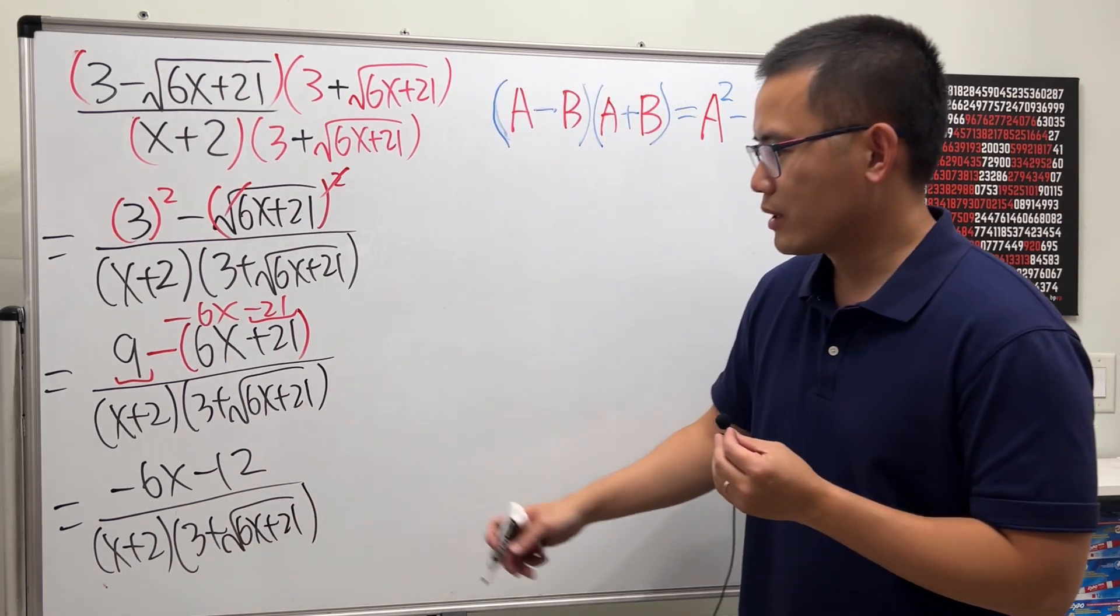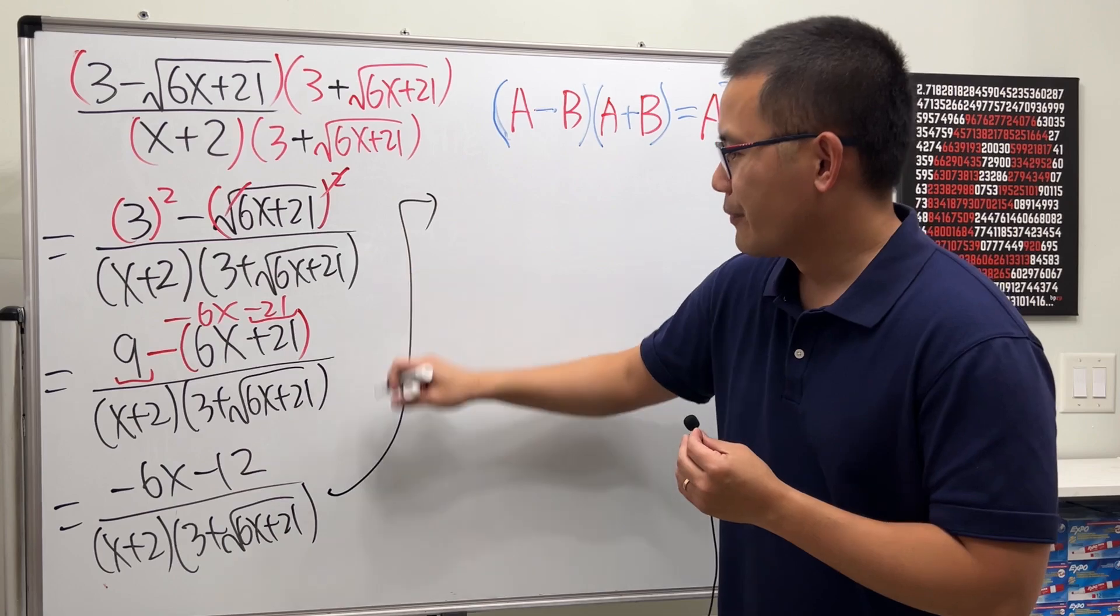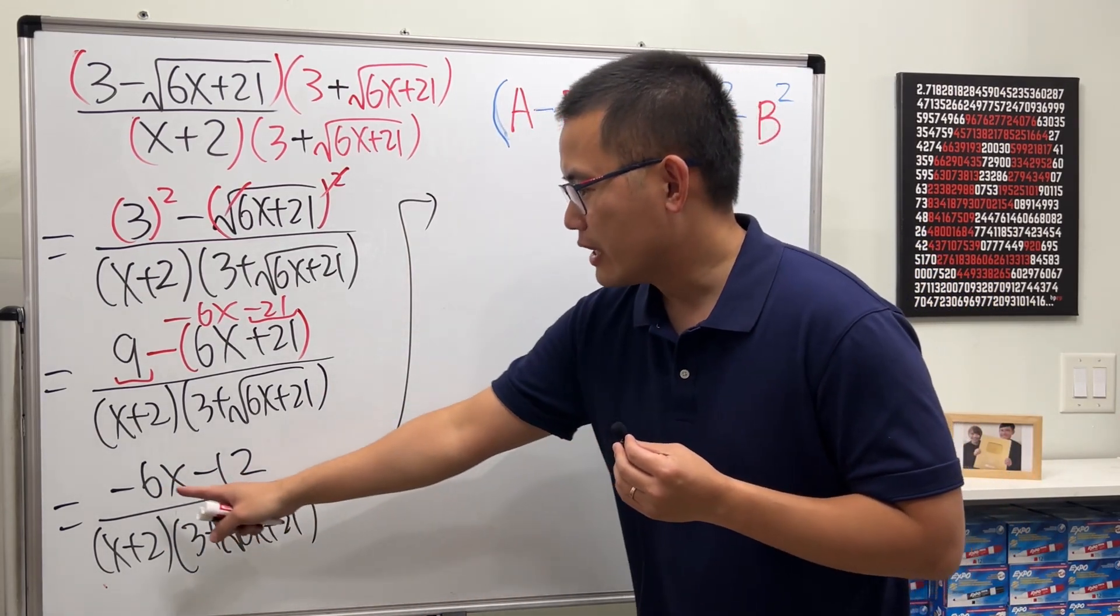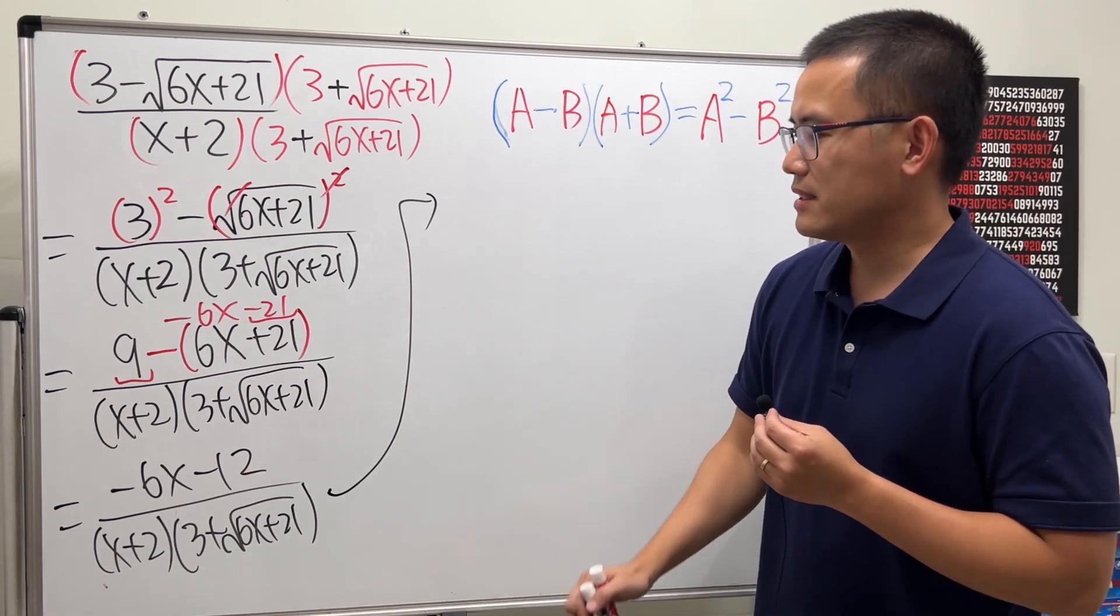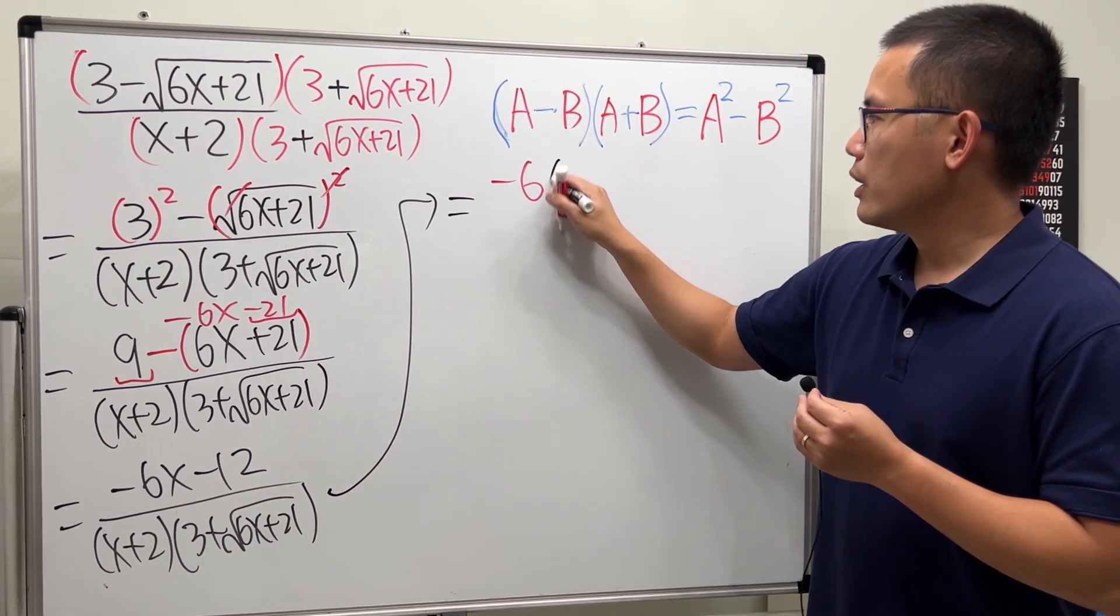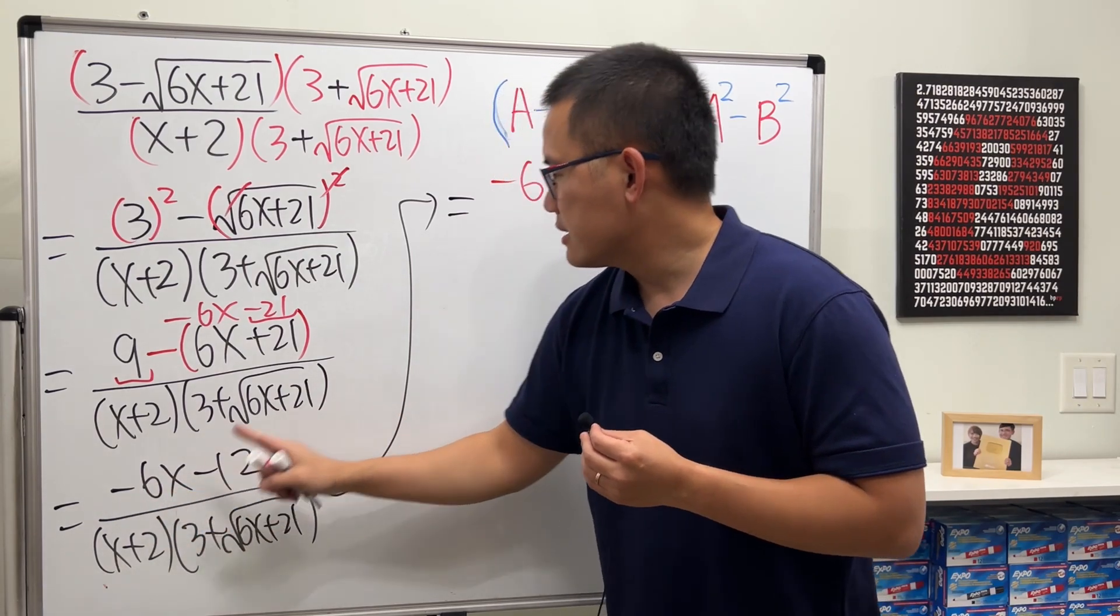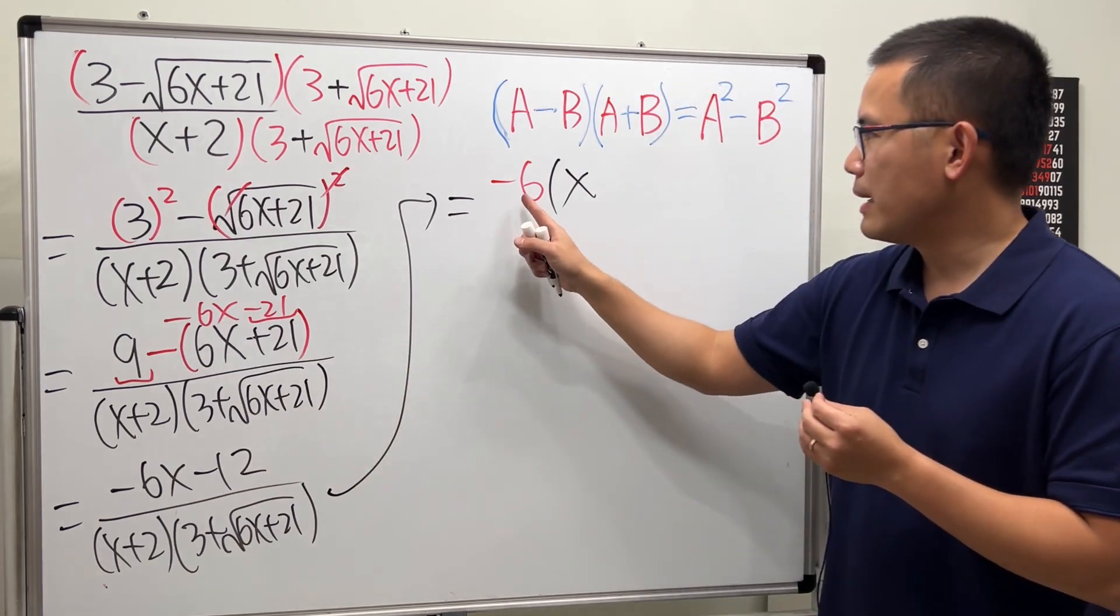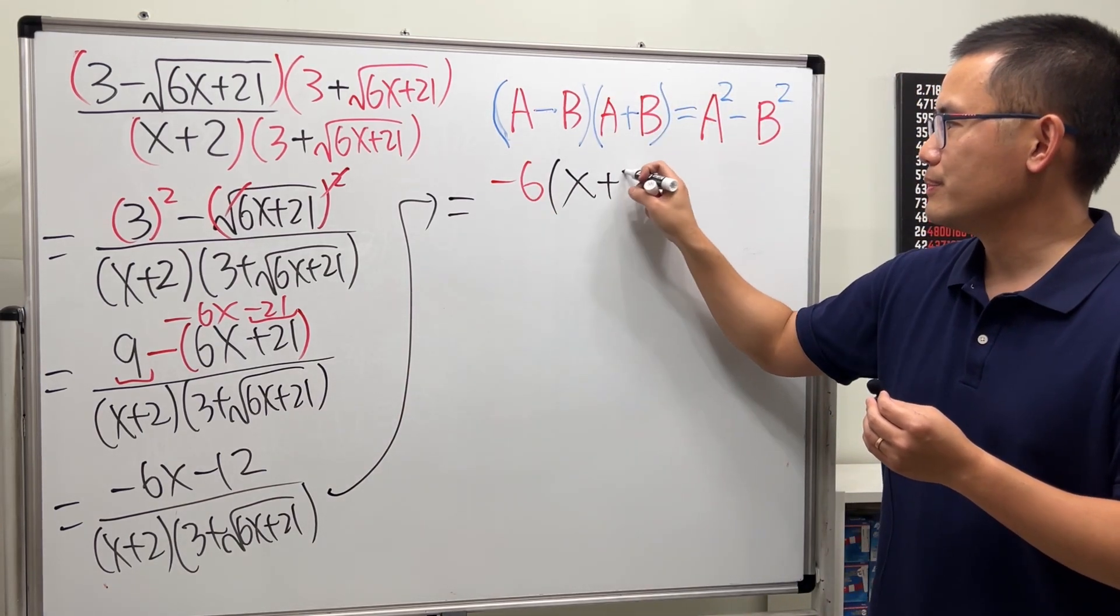This is like my workout of the day, you just keep writing it. Okay, continue. Now on the top, can we factor it? Yes we can factor out negative 6. So if we factor out negative 6, negative 6x divided by negative 6, we get positive x. Negative 12 divided by negative 6, we get plus 2. Aha!